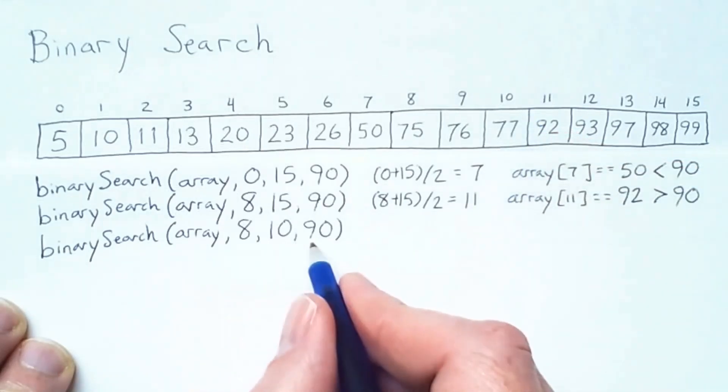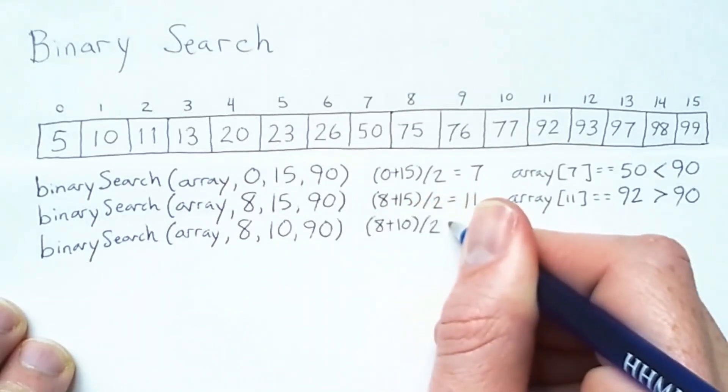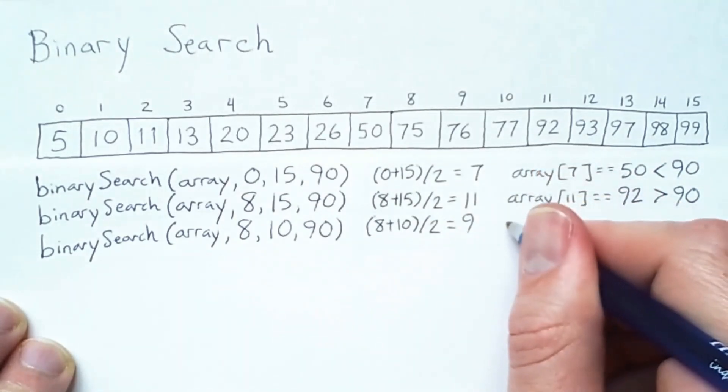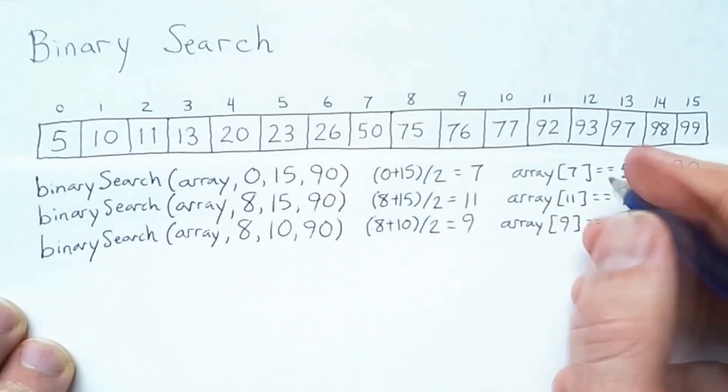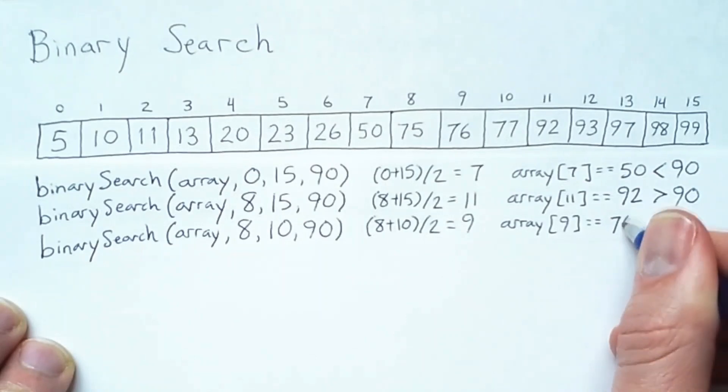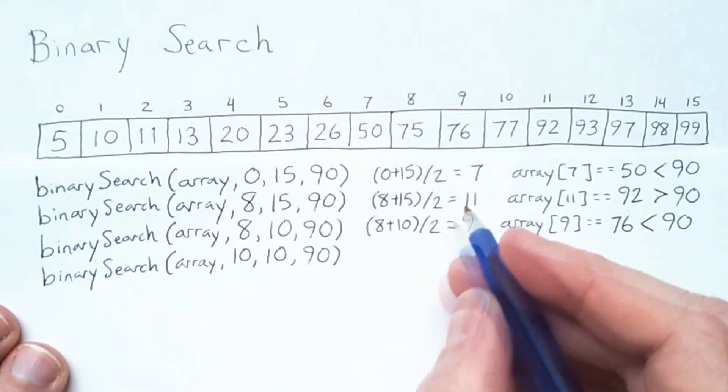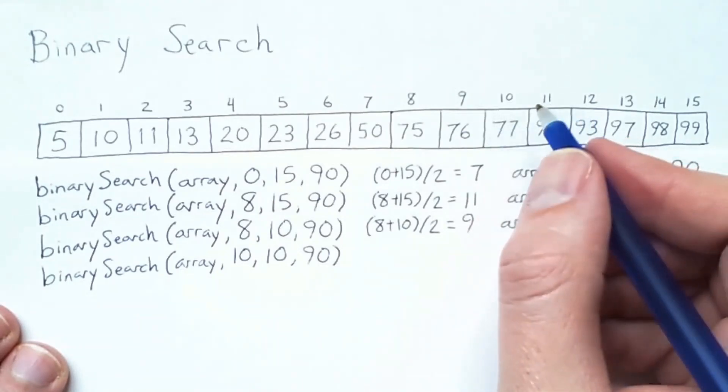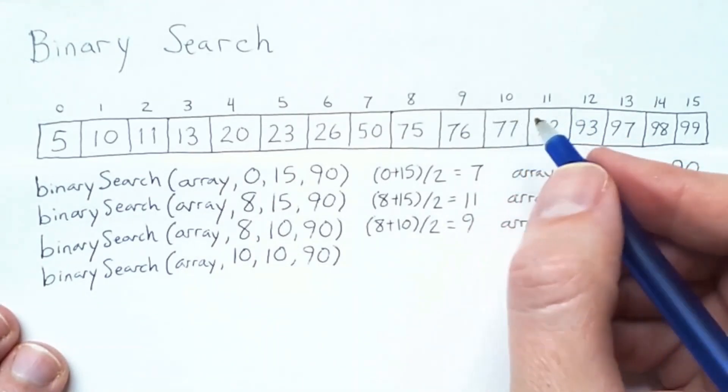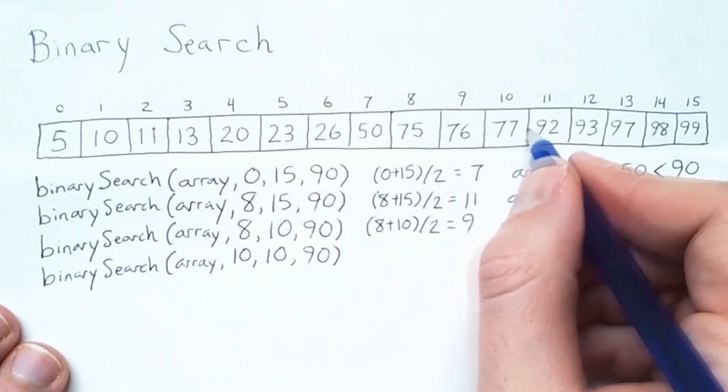We're searching from 8 to 10 for the search key of 90. The midpoint here is index 9, whose value is 76, which is less than 90. So now we'll go to the right of index 9, and the value to the right of 9 is 10. So 10 is both the lower bound of our range and the upper bound of our range. This is okay, because our range is inclusive. So really we're saying search for the search key of 90 within this single array cell of index 10.